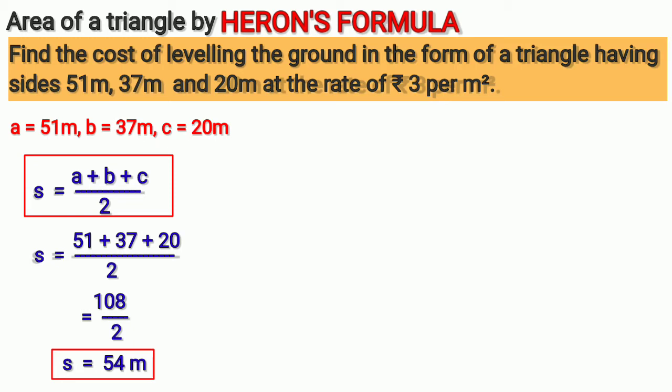To find area of triangle using Heron's formula, we need three sides and semi-perimeter. Now we have all these. Let us write the formula: A = √[s(s-a)(s-b)(s-c)].